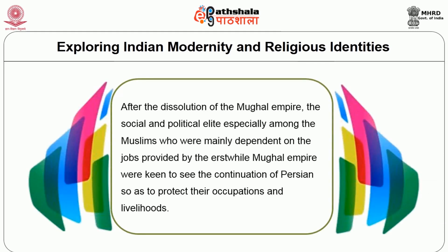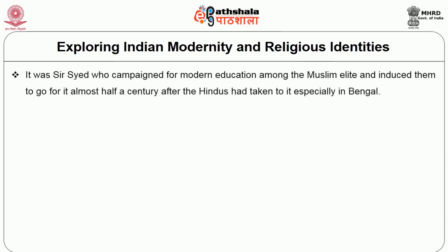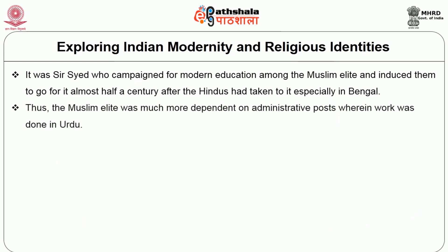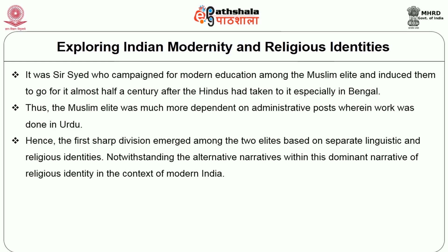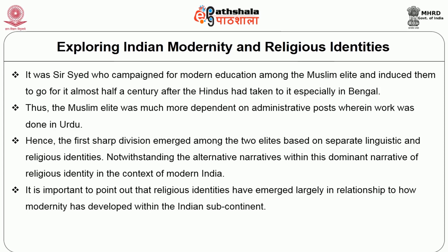After the dissolution of the Mughal empire, the social and political elite — especially among Muslims, who were mainly dependent on jobs provided by the erstwhile Mughal empire — were keen to see the continuation of Persian to protect their occupations and livelihoods. It was Sir Sayyid Ahmad Khan who campaigned for modern education among the Muslim elite and induced them to pursue it, almost half a century after Hindus had taken to it, especially in Bengal. Thus the Muslim elite was much more dependent on administrative work done in Urdu, and hence the first sharp division emerged among the two elites based on separate linguistic and religious identities. Notwithstanding alternative narratives, religious identities in modern India have emerged largely in relationship to how modernity has developed within the Indian subcontinent.